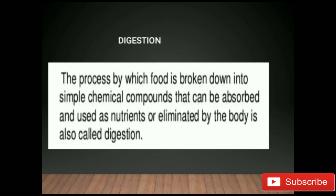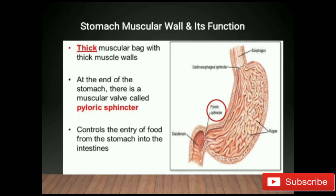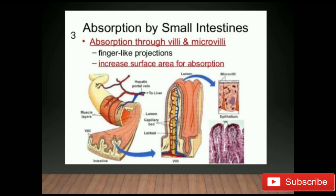The stomach is a thick muscular bag with thick muscular walls. At the end of the stomach there is a muscular valve called the pyloric sphincter. As shown in the diagram, the pyloric sphincter is present at the end of the stomach and it controls the entry of food from the stomach into the intestine.